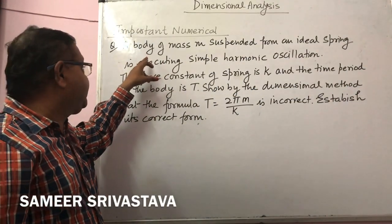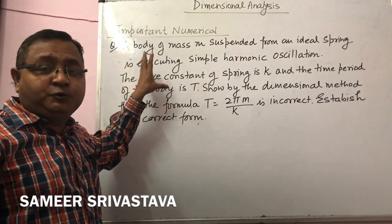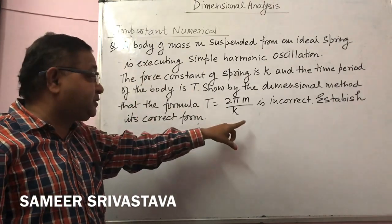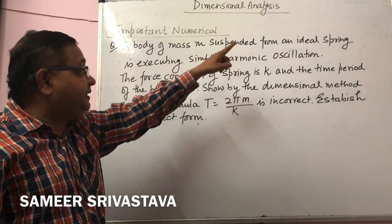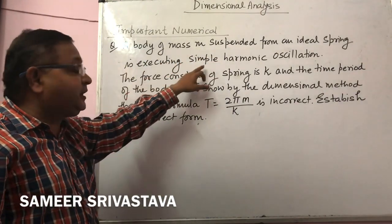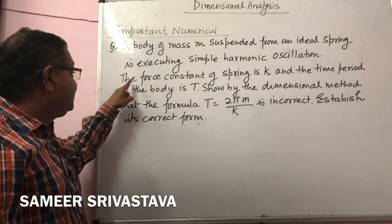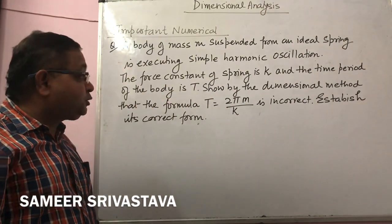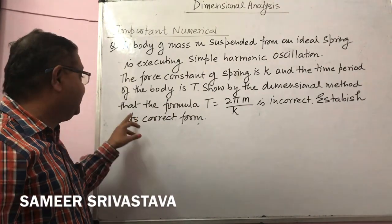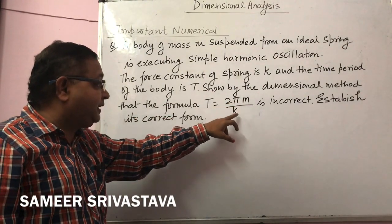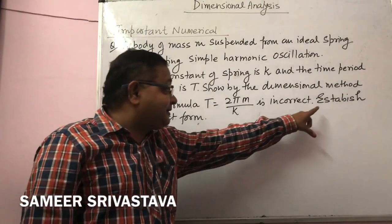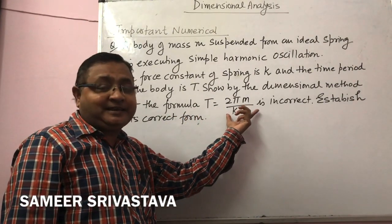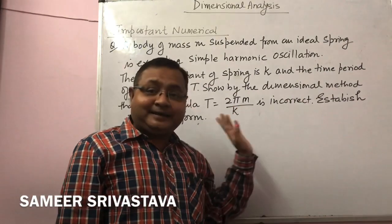The next question uses two applications of dimensional analysis — correctness of equations and establishment of formulas. A body of mass M suspended from a spring with force constant K executes simple harmonic oscillation with time period T. Show by dimensional method that T = 2π(M/K) is incorrect, then establish the correct form.